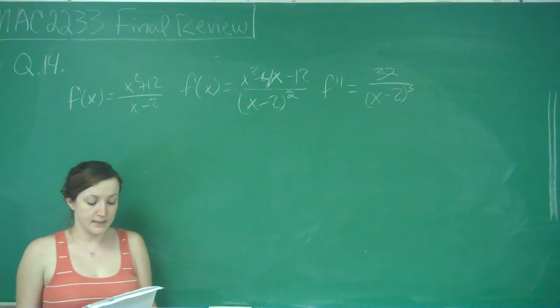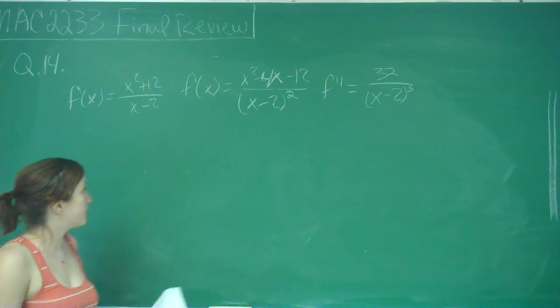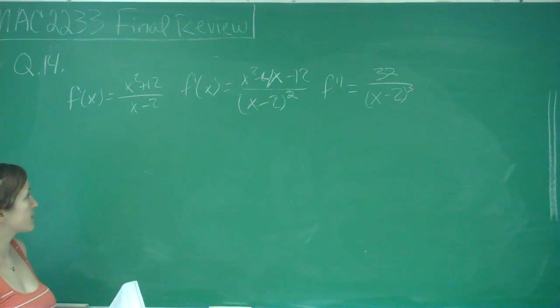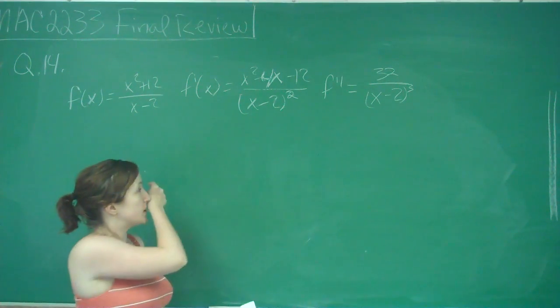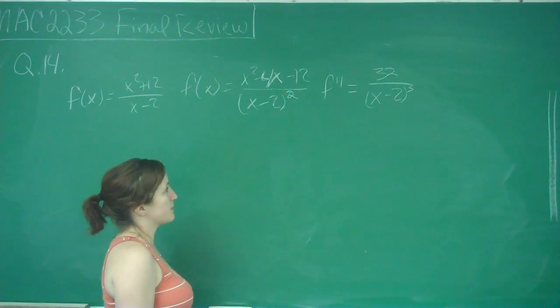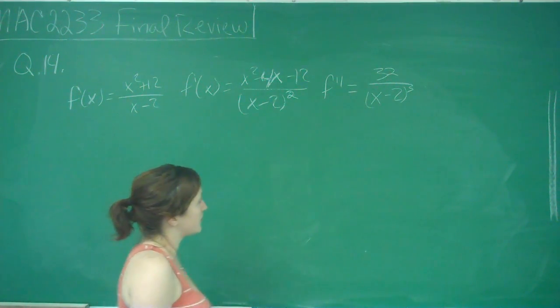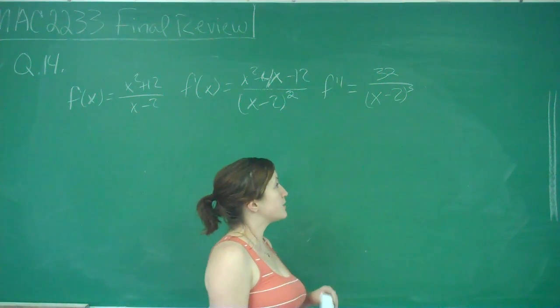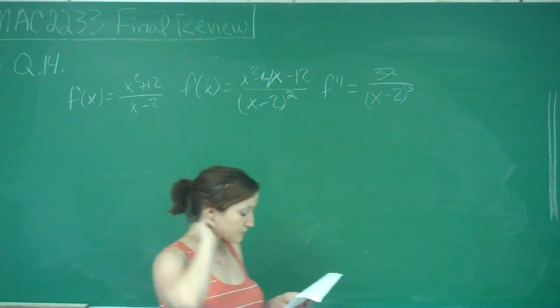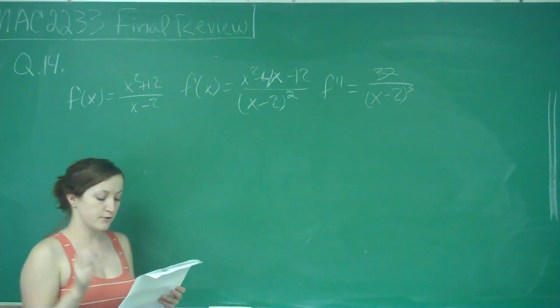This is question number 14, and it says given all this information: f of x equals x squared plus 12 over x minus 2, f prime of x equals x squared minus 4x minus 12 over x minus 2 squared, and f double prime equals 32 over x minus 2 cubed. Which of the following statements is or are true?